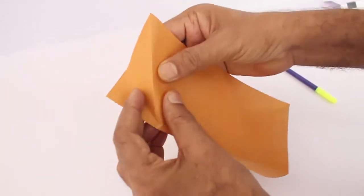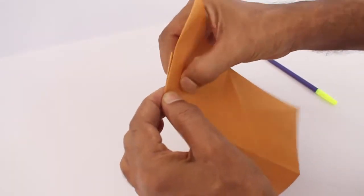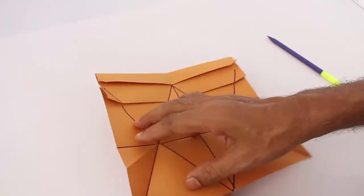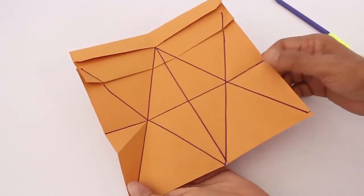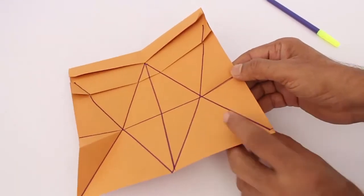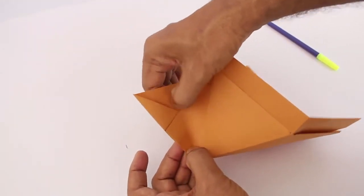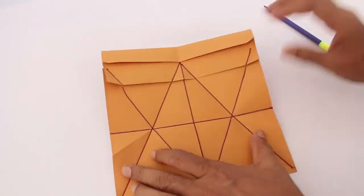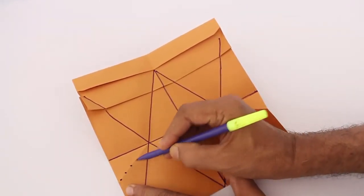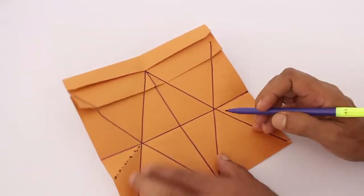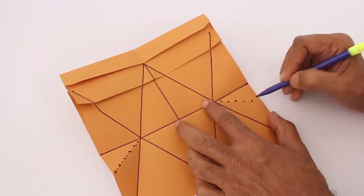Now fold these small triangles into half as shown and you would generate a mountain fold. You can see the mountain fold. Repeat this with the other small triangles too. Now both these mountain folds you depict with dotted lines.